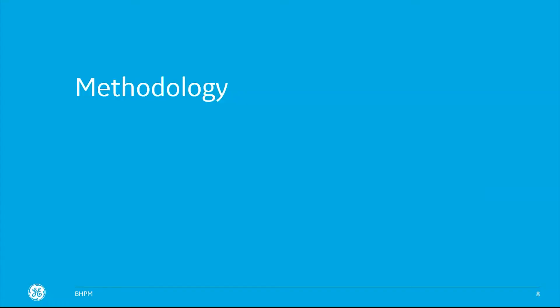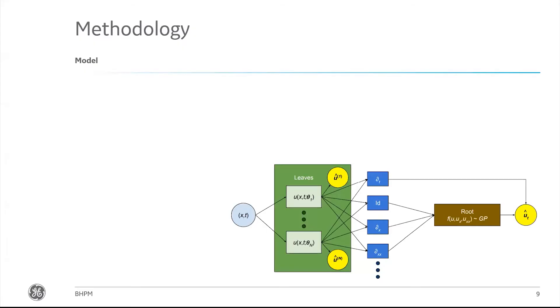I'm going to delve into the methodology we're using. This slide talks about what is a Bayesian hidden physics model. This model comprises a few things. The first is a set of leaf nodes shown in this green box. These are basically neural implicit representations of that spatial temporal field U of X, and they're parameterized just by simple multilayer perceptrons. In other words, X and T is just a vector that goes into this fully connected neural network, and out comes the U.